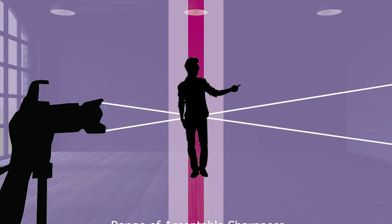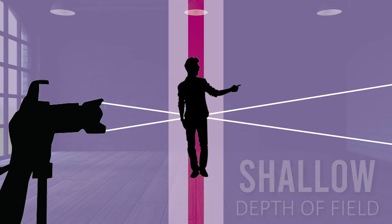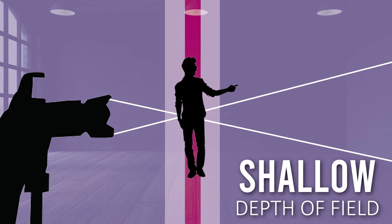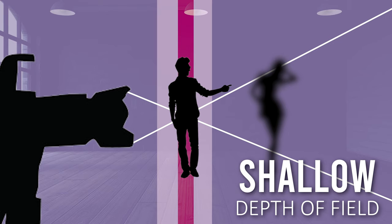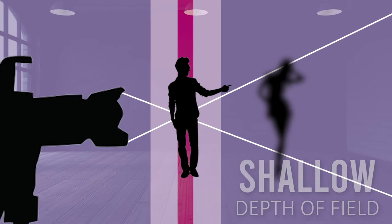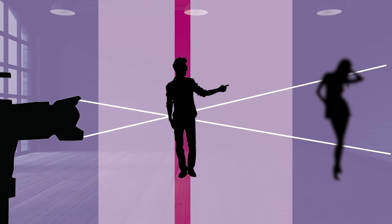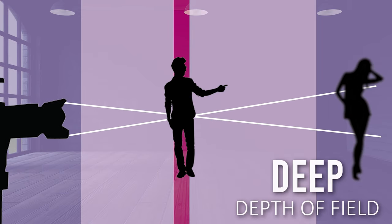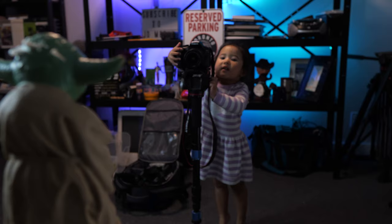A small zone or range of focus is known as having shallow depth of field, where the transition from sharp to blurry is abrupt. And a large zone or range of focus is known as having deep depth of field, where the transition from sharp to blurry is much more gradual. Now let's get to getting blurry.